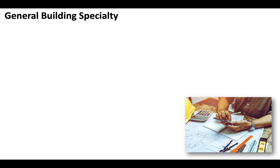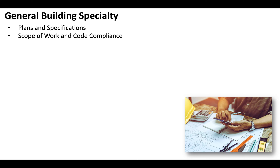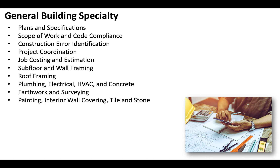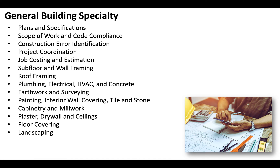The general building specialty portion of your exam is going to be extremely critical. There's a lot you're going to be tested on, including plans and specifications, scope of work and code compliance, construction error identification, project coordination, job costing and estimation, subfloor and wall framing, roof framing, plumbing, electrical, HVAC and concrete, earthwork and surveying, painting, interior wall covering, tile and stone, cabinetry and millwork, plaster, drywall and ceilings, floor covering, landscaping, blueprint reading, and Cal OSHA safety regulations.